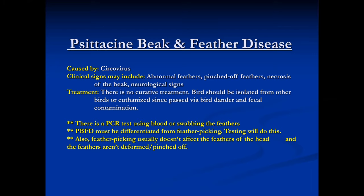The big challenge is that beak and feather disease looks like feather picking. The key difference: if a bird looks totally healthy on its head but has feather loss from the neck down, think circovirus. With circovirus, feathers on the head are affected as much as the body. With feather picking, the head is always perfectly normal because the bird can't reach those feathers.